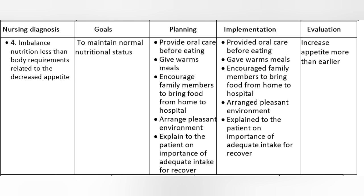Goals: To maintain normal nutritional status. Planning: Provide oral care before eating. Give warm meals. Encourage family members to bring food from home to hospital. Arrange a pleasant environment. Explain to the patient the importance of adequate intake for recovery. Implementation: Provided oral care before eating. Gave warm meals. Encouraged family members to bring food from home to hospital. Arranged a pleasant environment. Explained to the patient the importance of adequate intake for recovery.